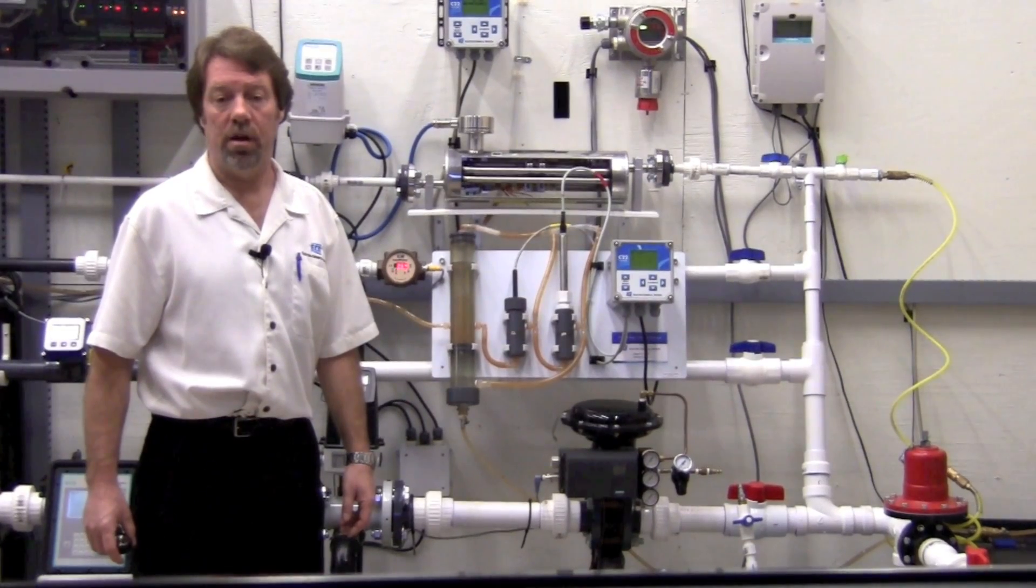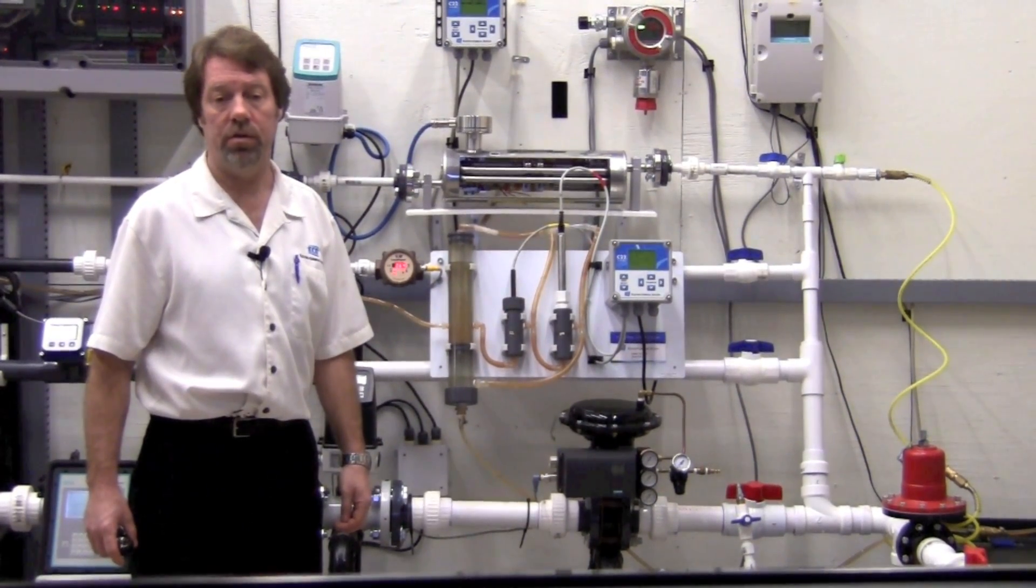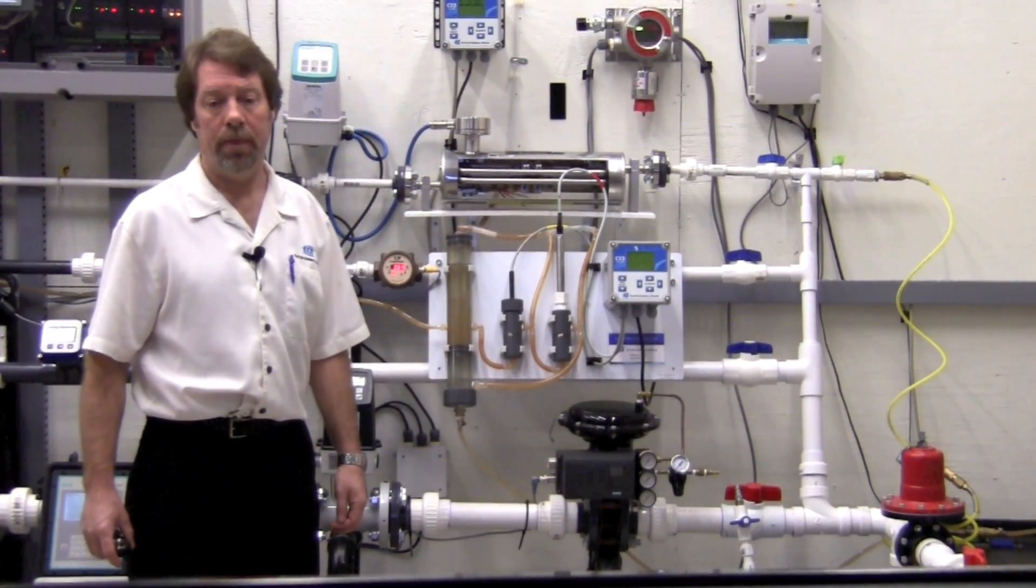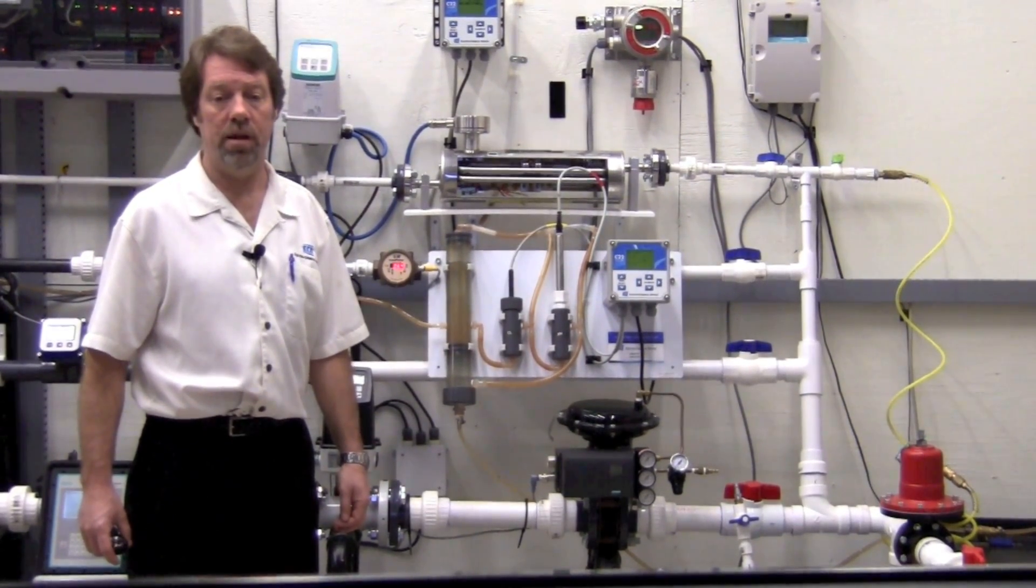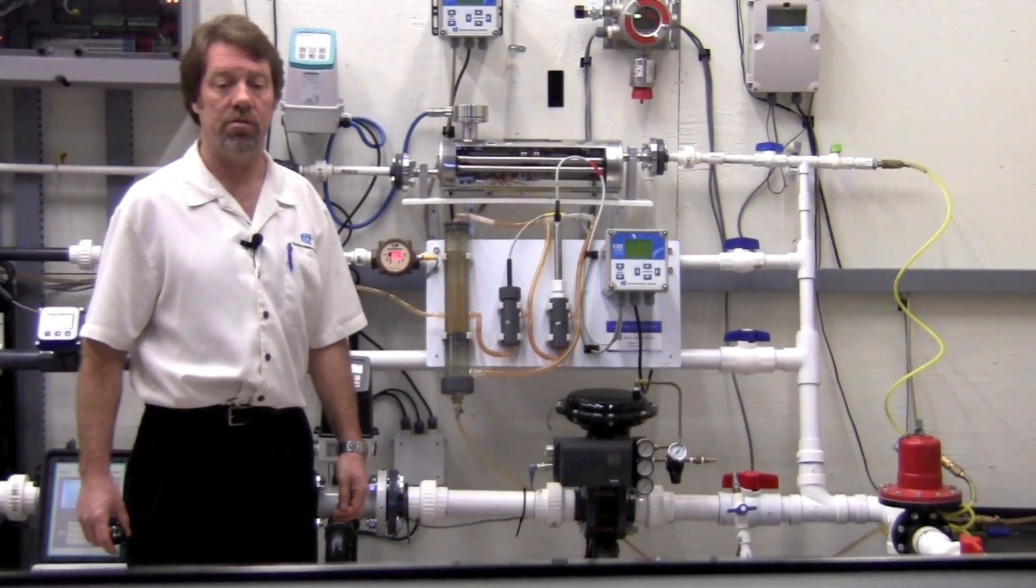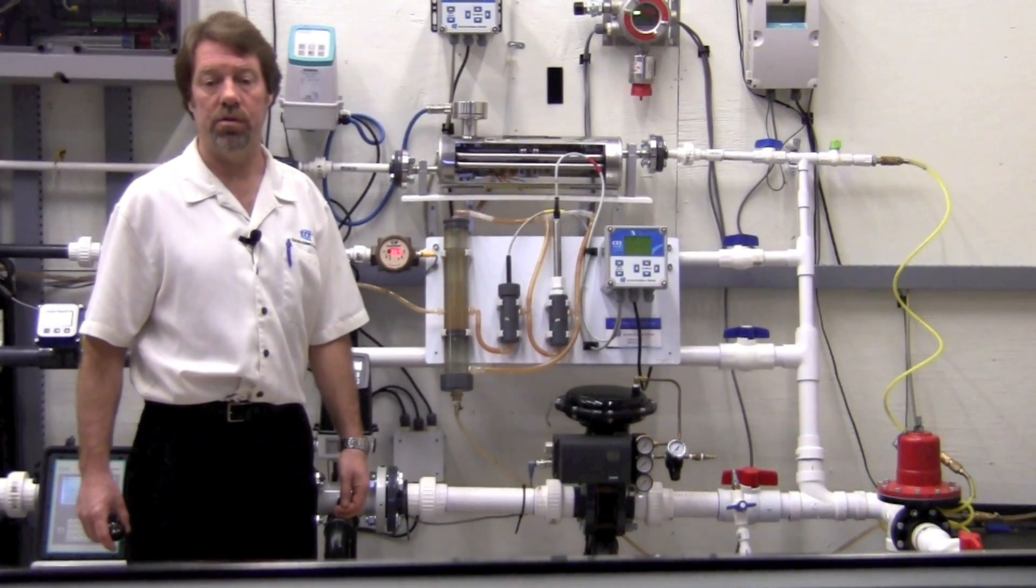The routine maintenance of the ECD chlorine system consists of periodic calibration and maintenance of both the pH and the chlorine sensors. The frequency of the routine maintenance is determined by the chlorine sensor being used and the amount of chlorine that's running through the system.